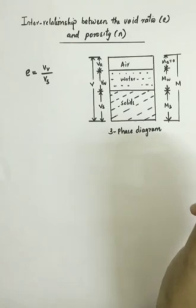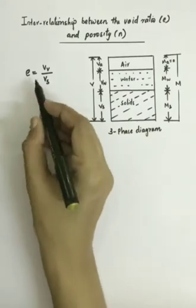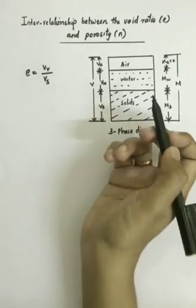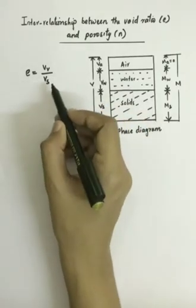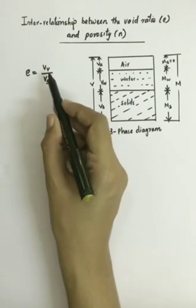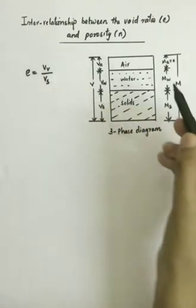Relationship between void ratio and porosity. So before starting, you should know what is void ratio and what is porosity. Void ratio is defined as the ratio of volume of voids to the volume of solid.